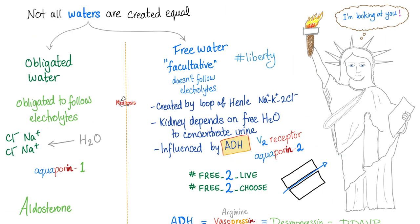In an upcoming video, I'll tell you about the difference between obligated water and free water. What did aldosterone do? It reabsorbs salt and water. This water is obligated to follow the salt. This is an example of obligated water. You know what free water is? It's water that doesn't care about salt. It's not attracted to the salt because it is free and independent.